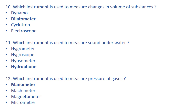Which instrument is used to measure sound under water? The right answer is hydrophone. It is an instrument used to measure sound under water. The speed of sound under water is 1484 meters per second, while the speed of sound in air is 343 meters per second — about 4.3 times faster in water than in air.